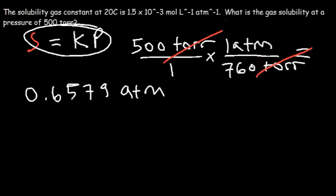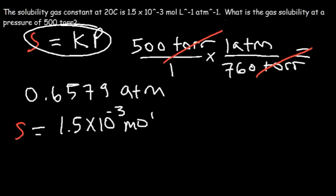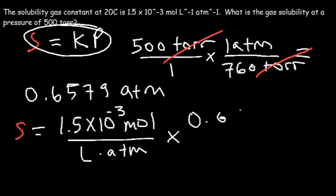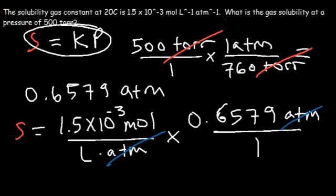So now let's use the equation. So S is equal to K which is 1.5 × 10^-3 moles per liter per atm times 0.6579 units of atm. And we can see that these units will cancel. And so S is going to have the units moles per liter, which is molarity.